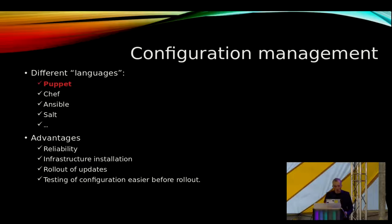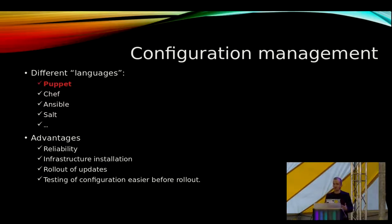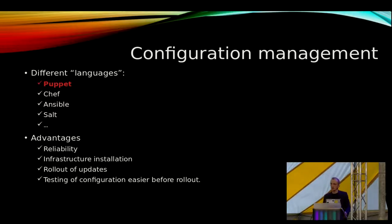Let me give a quick introduction about configuration management. Configuration management is a general term for a way to easily deploy or update configuration across different servers or workstations in a network. There are a few different systems for that — Puppet, Ansible, Chef, Salt, and others. I'll go deeper into Puppet, because that's the system I'm most familiar with, having used it for the last three or four years. In my opinion, Puppet is the most easy to use because it's quite clear how you can use it.